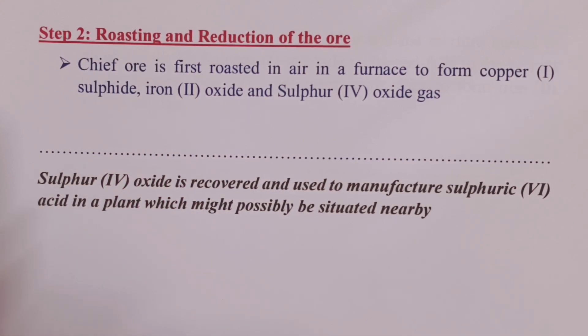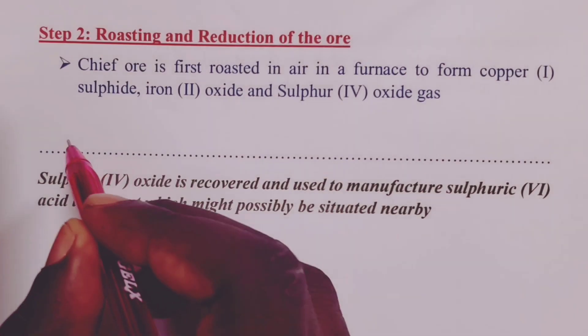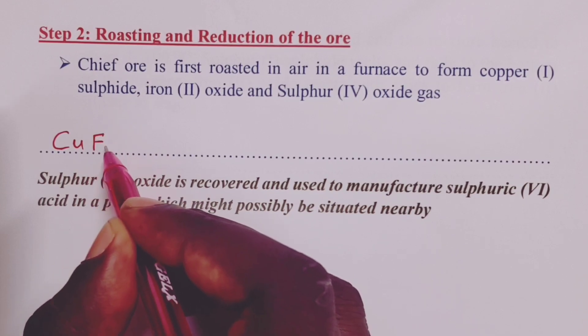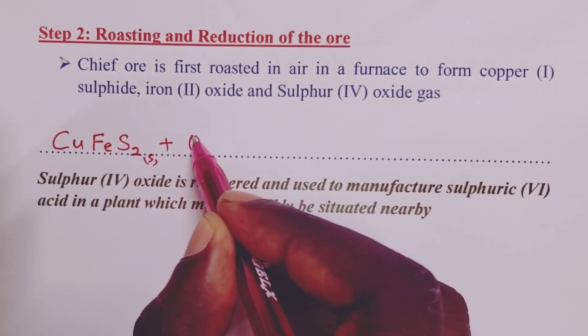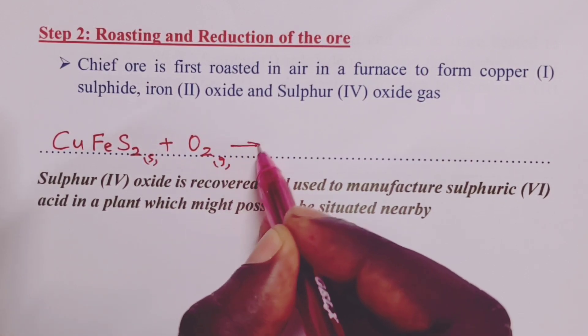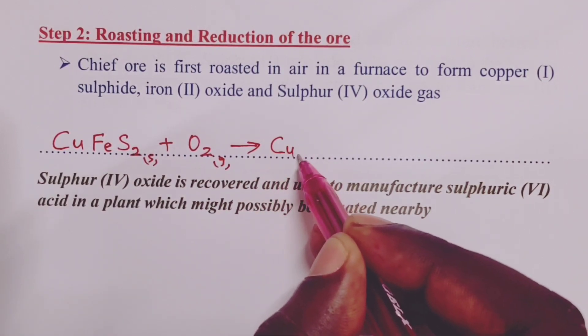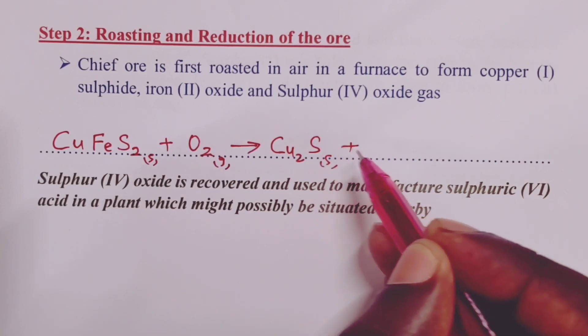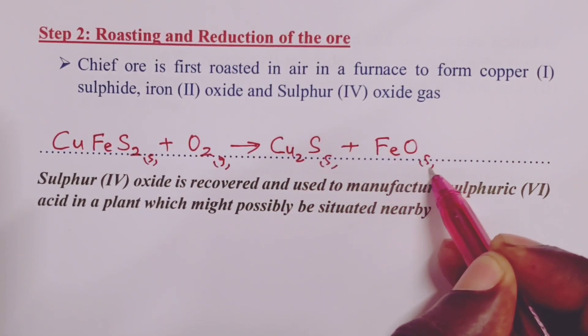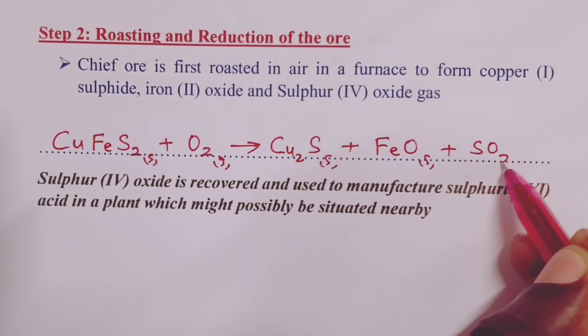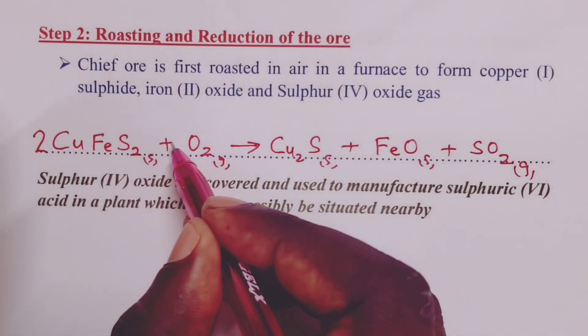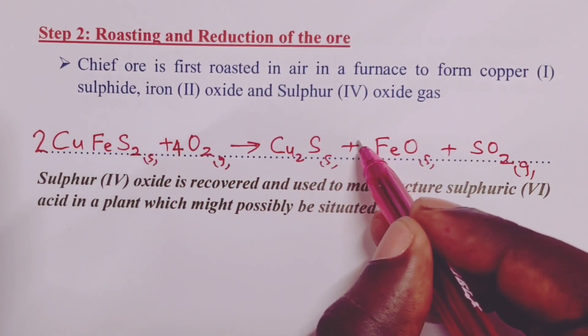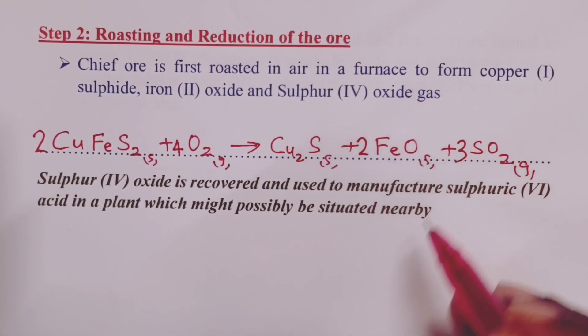This can be represented in an equation as follows. Our ore, copper iron-2-oxide, which is a solid, will react with oxygen in the air during roasting to give us copper-1-sulfide, iron-2-oxide, and sulfur-4-oxide. The equation is balanced with a 2 on our ore, a 4 on oxygen, a 2 on iron-2-oxide, and a 3 on sulfur-4-oxide.